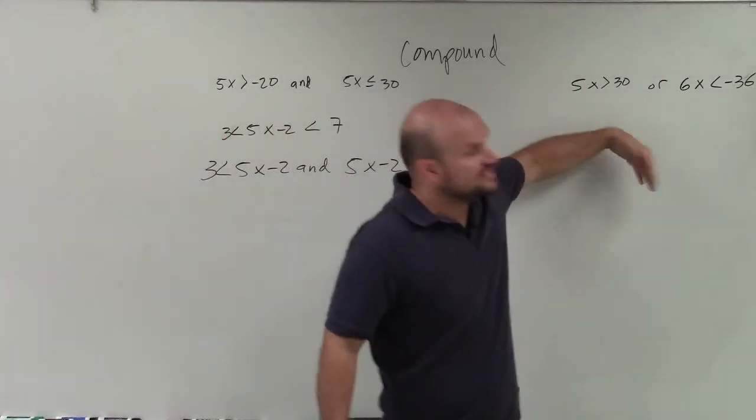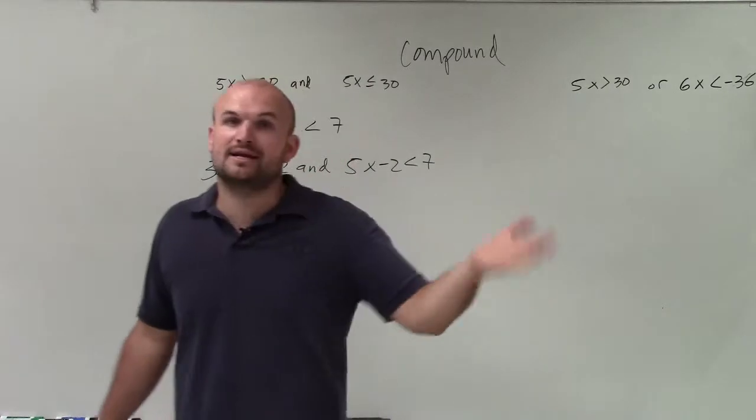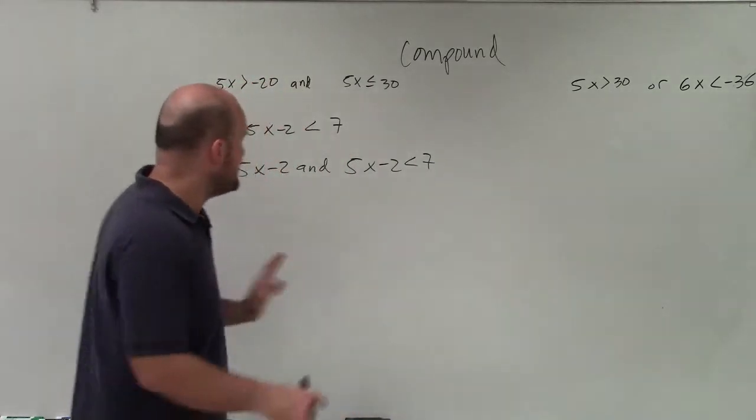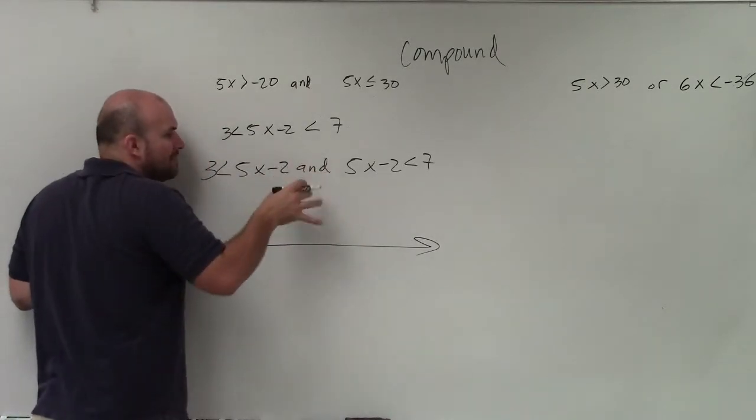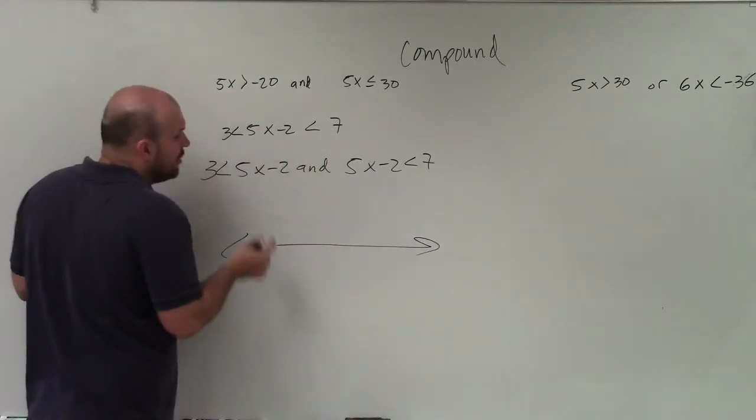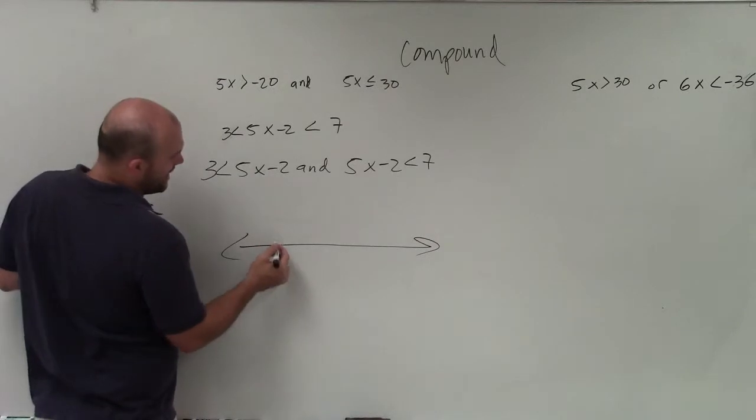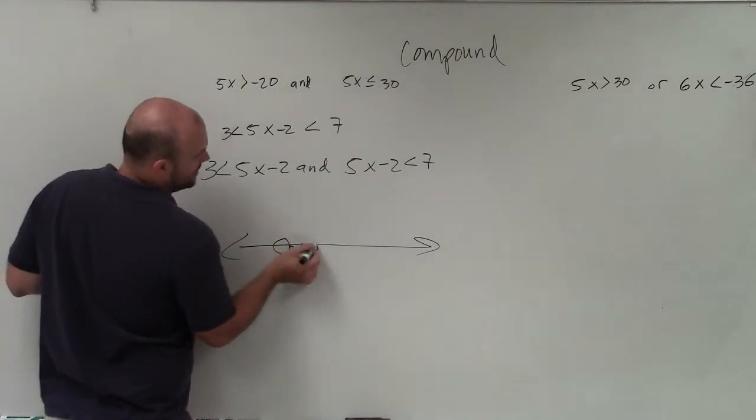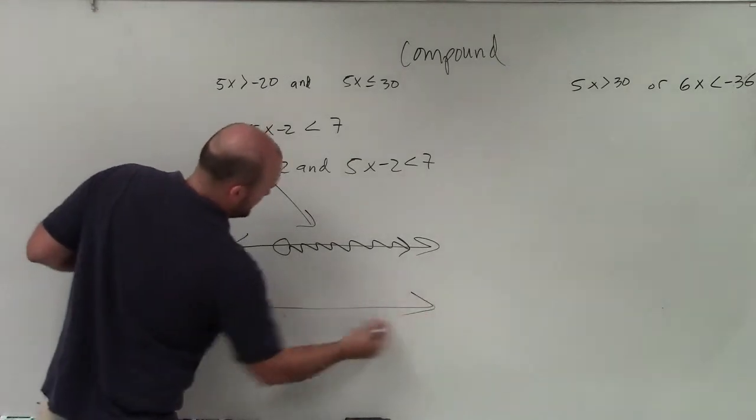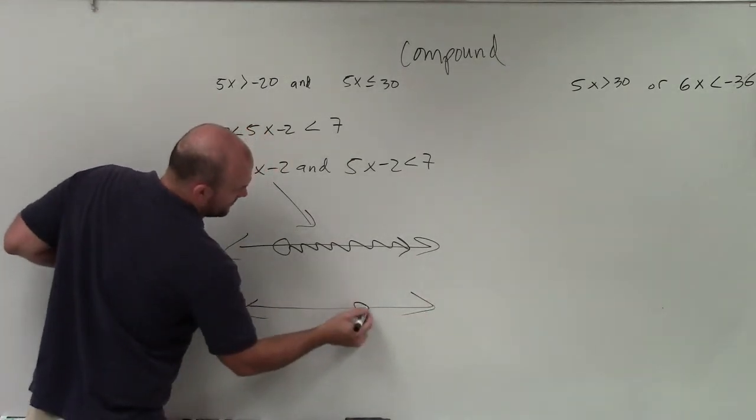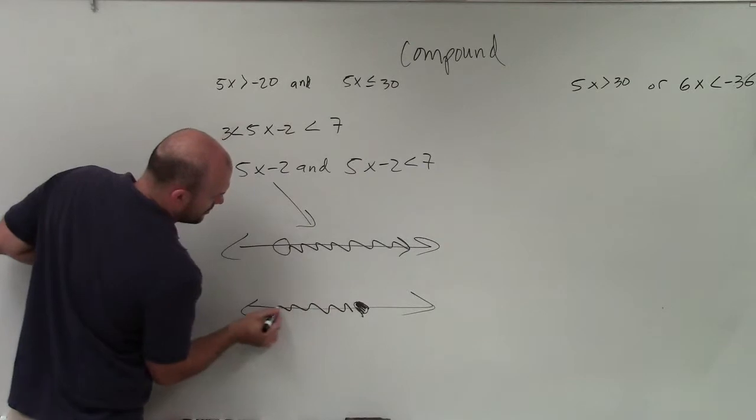And over here, this is an or statement. So it's going to be one inequality or the other. So basically, when we're looking at a compound inequality that has the word and, for an inequality, let's say you graph an inequality and here, that's one inequality, right? And then the other inequality looks like this.